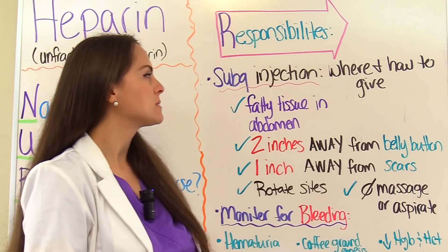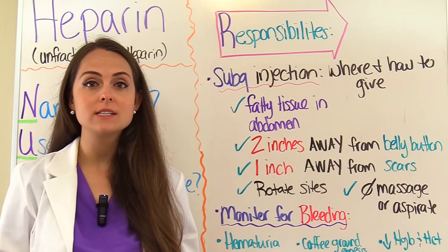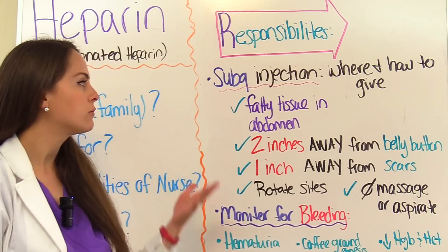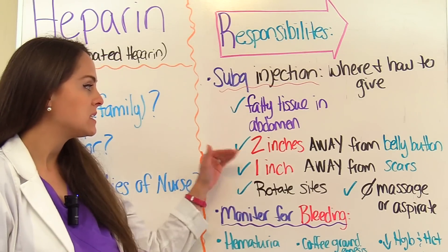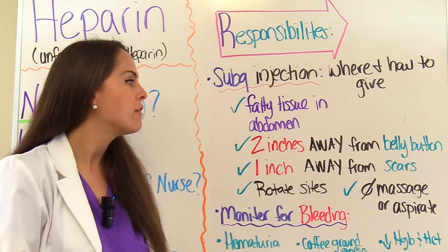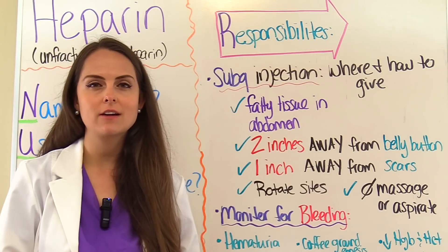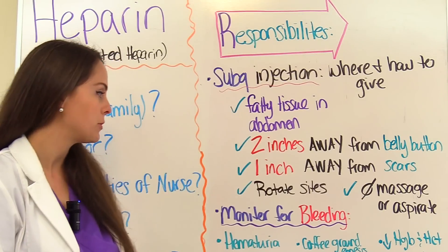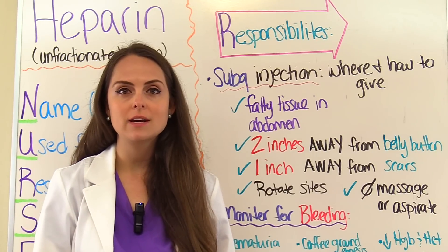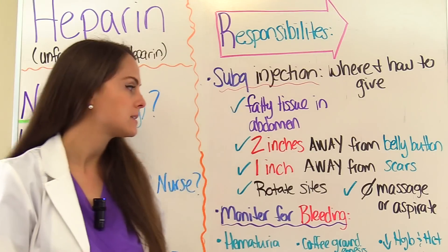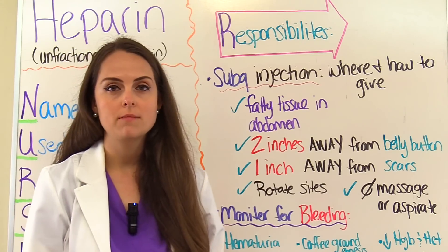Let's look at some more responsibilities, especially with injectable heparin through the sub-Q tissue. We want to administer it in the fatty tissue in the abdomen, staying at least two inches away from the belly button and one inch away from scars — injecting near scars won't absorb well due to scar tissue. Also rotate sites: check the chart, ask the patient where the previous nurse administered it, and always go on the opposite side. When you give it, do not massage or rub the injection site.